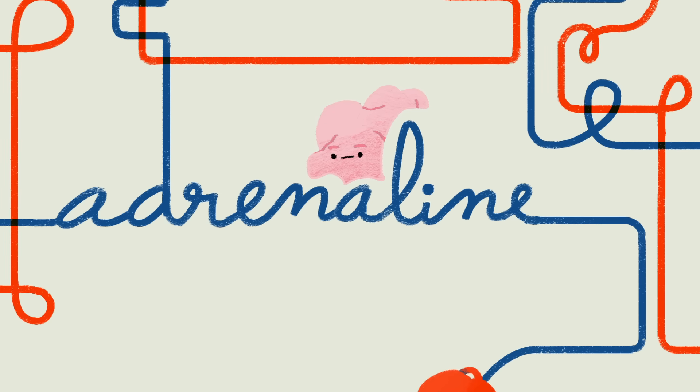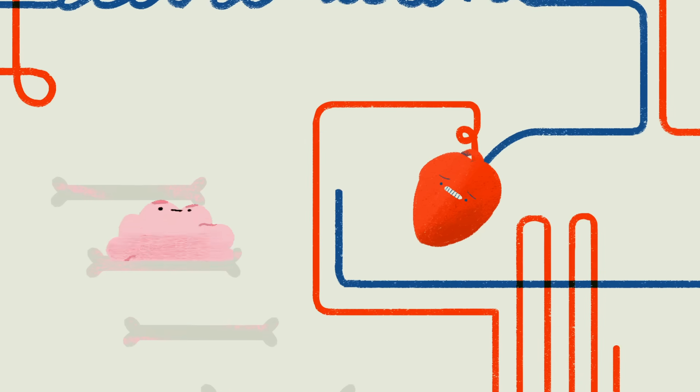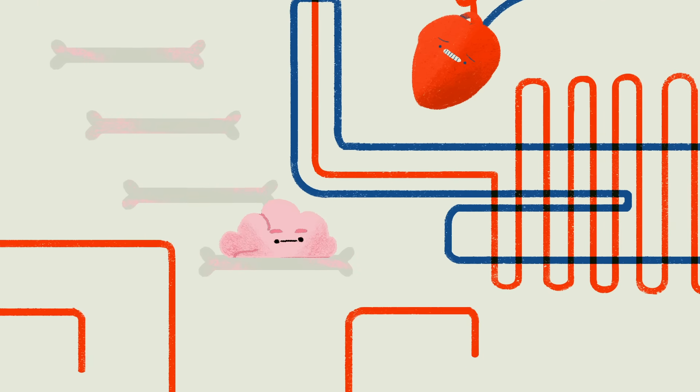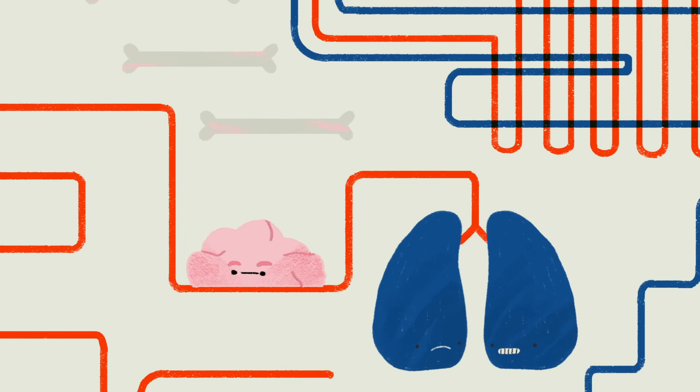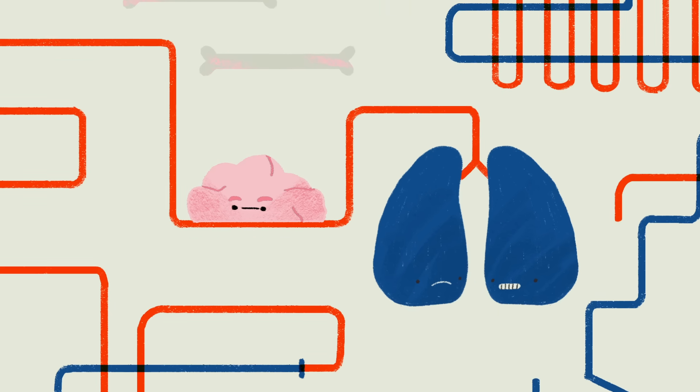Adrenaline prompts an increase in the heart and breathing rate to get blood and oxygen to the muscles of the arms and legs. This also sends oxygen to the brain, making it more alert and responsive.